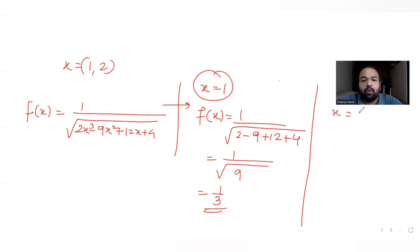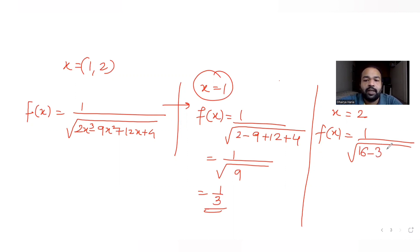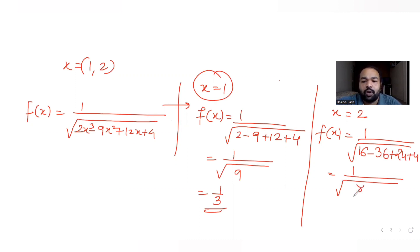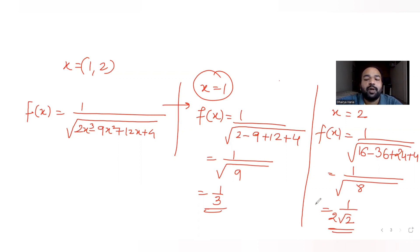At x=2: f(2) = 1 upon root of (2·8 minus 9·4 plus 12·2 plus 4) = 1 upon root of (16 minus 36 plus 24 plus 4) = 1 upon root of 8 = 1 upon 2√2. Comparing: 1/3 is less than 1/(2√2) since 2√2 ≈ 2.83, so the denominator is smaller at x=2, making f(2) greater.